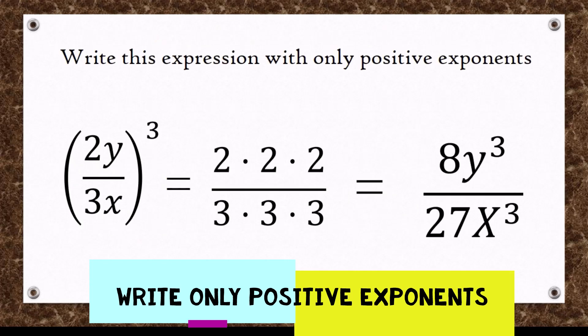The next step is to multiply the exponent 3 to the expression 2y divided by 3x. The way this exponent works is you multiply 3 to 2, meaning 2 becomes 2 to the 3rd power, which is 2 times itself 3 times: 2 times 2 times 2, which equals 8.